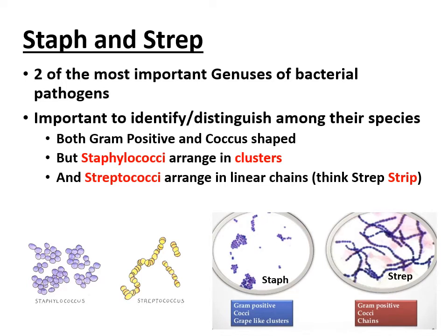Both are coccus shaped, meaning they're round — you can get that from their names, Staphylococcus and Streptococcus. Where they differ is their arrangement. Staphylococcus — 'staphyl' means grapes in Greek — clusters together like a bunch of grapes, whereas Streptococcus arranges in a linear fashion, forming little chains or necklaces. Both are gram positive, purple, and round, but clustered versus linear.